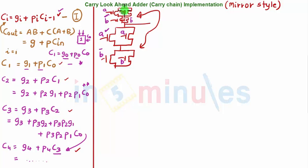Okay, let's quickly go ahead and implement C1 in mirror style so that we understand what I'm talking. C1 is nothing but g1 plus p1 c0. We have already seen the pull-down implementation. Let's quickly do that. This is